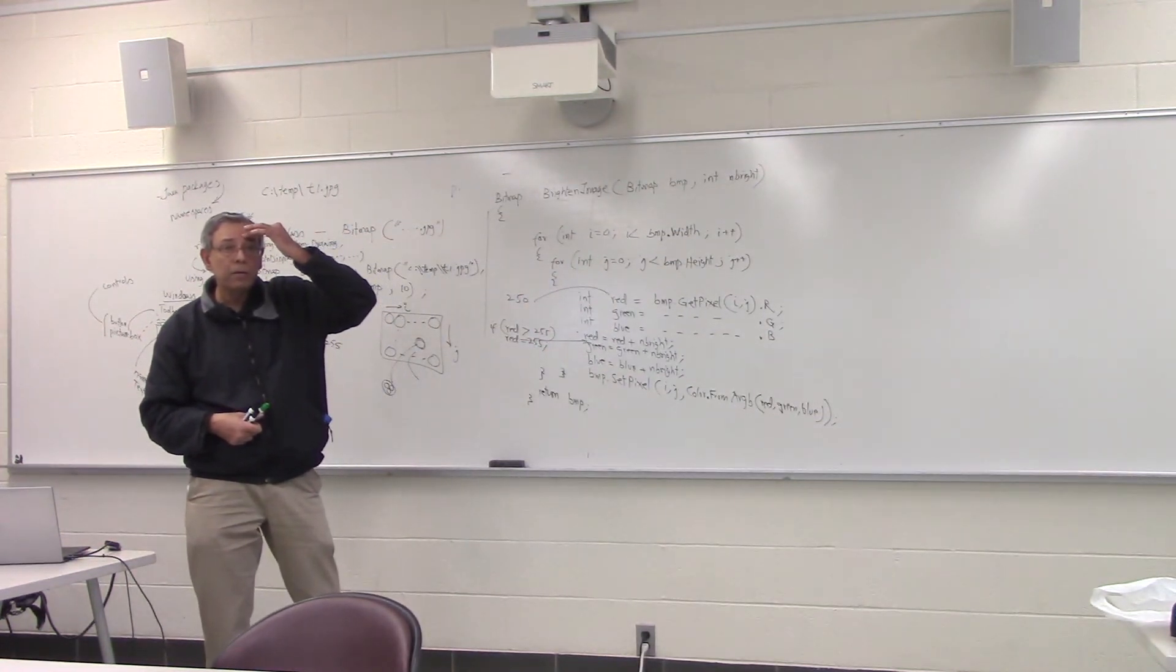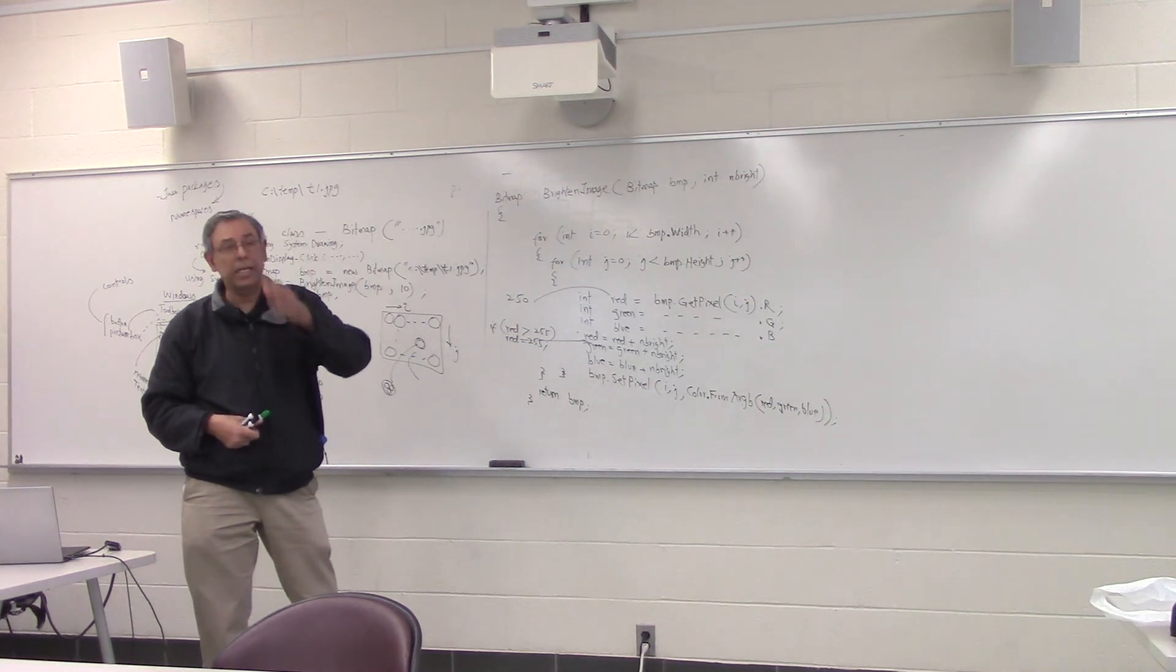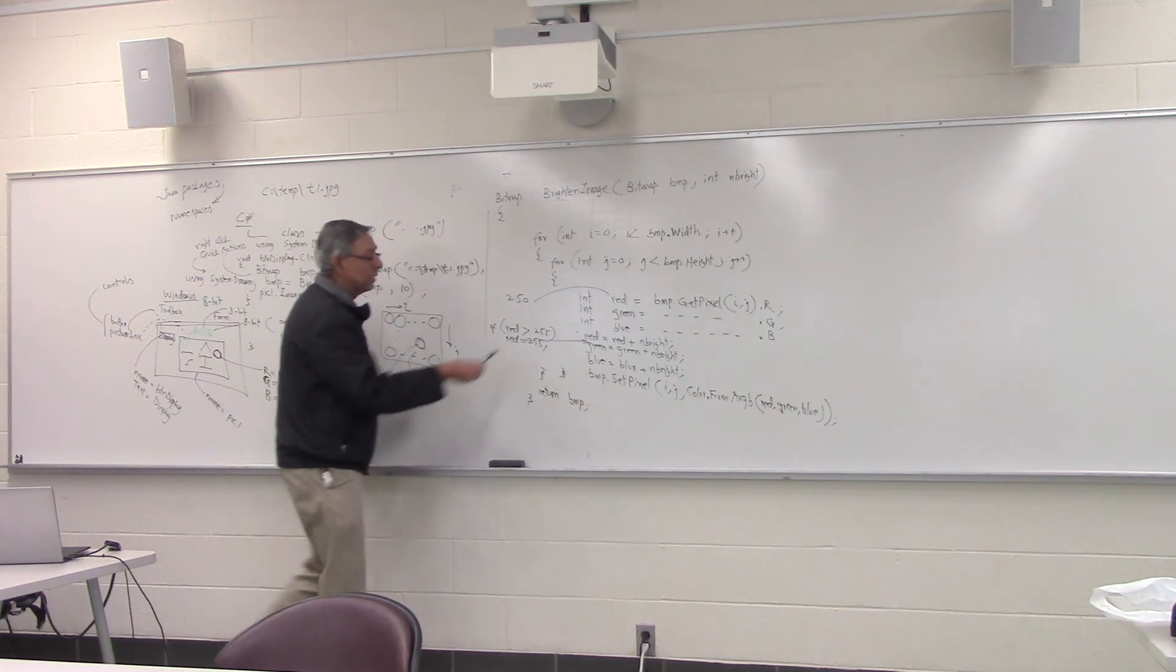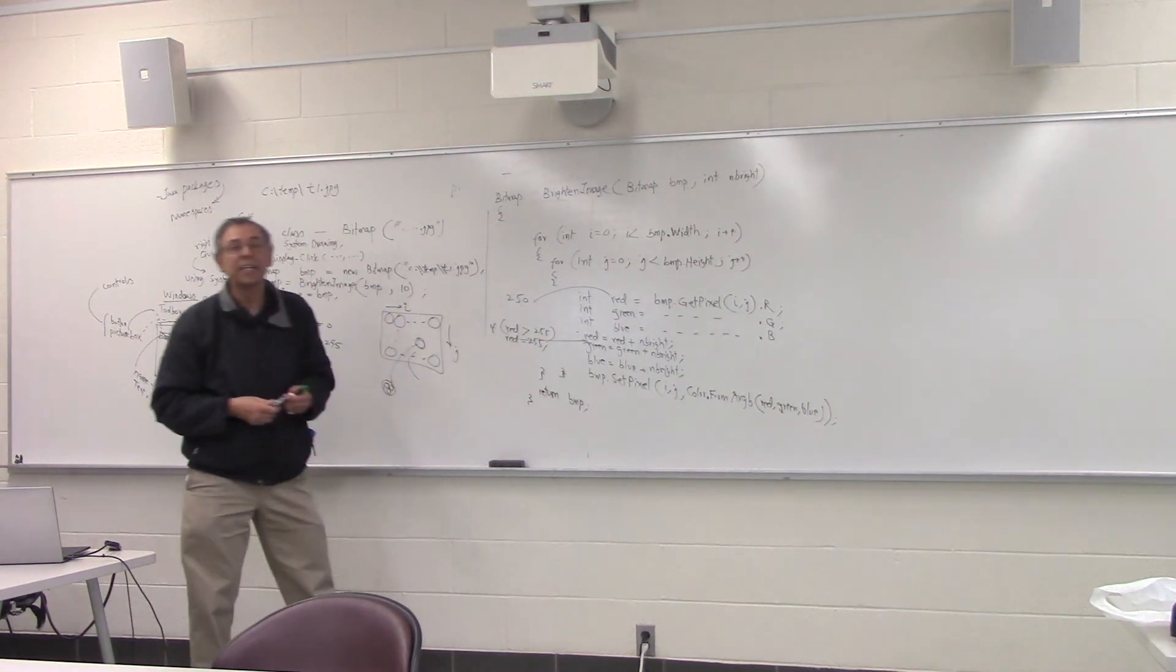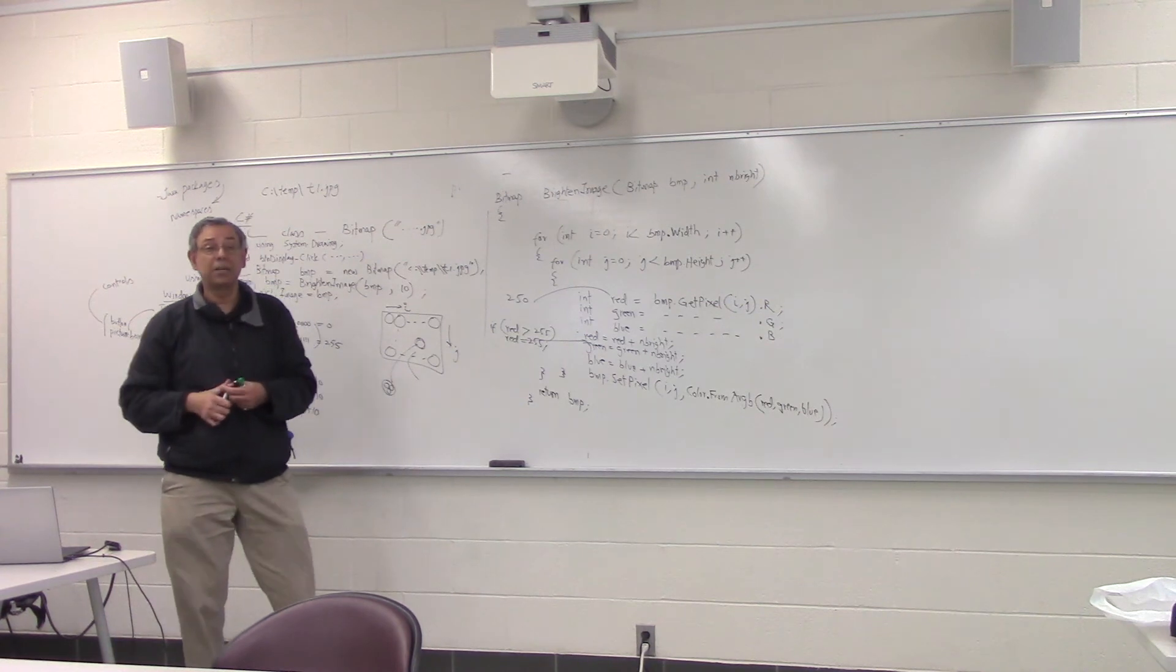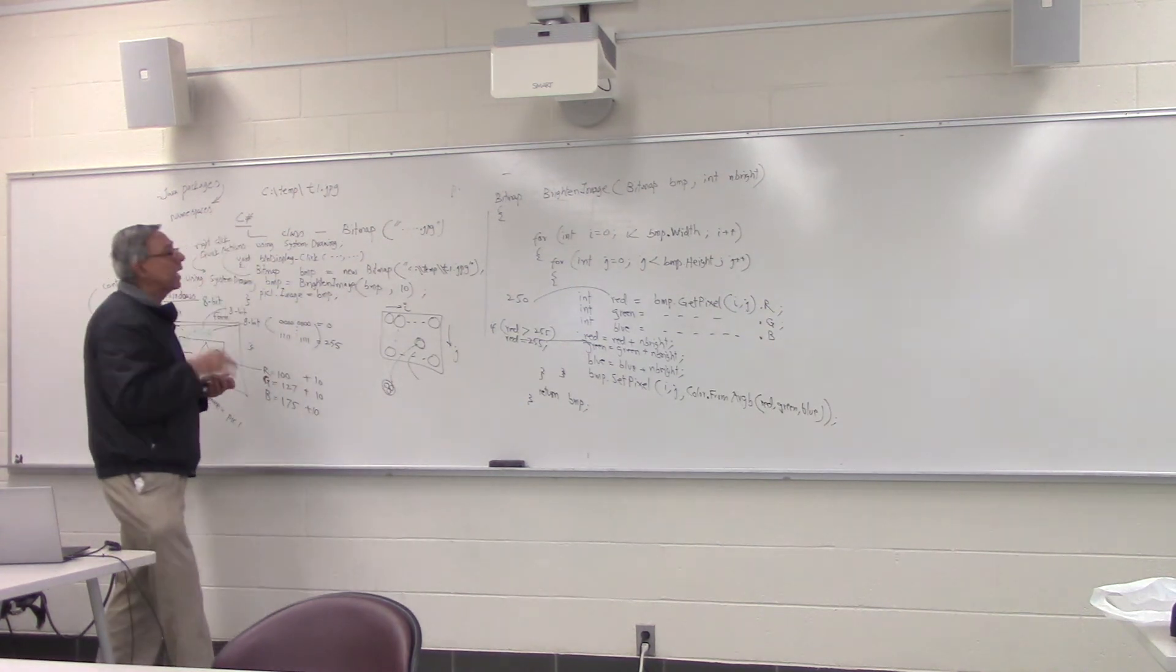We're saying to brighten, we add 10. If we wanted to make it less bright, we could subtract 10. Yes, you are correct. But once you subtract, it might go below zero then. And you can't do that. You can't have a negative value. You would put another statement that if less than zero, set it to zero.